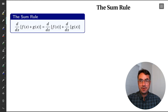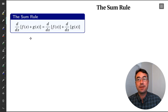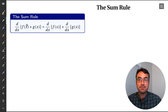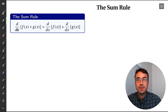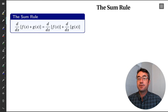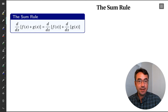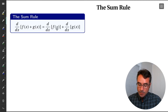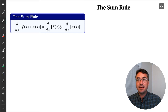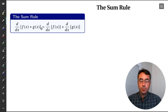We get another one of our derivative rules here, and this tells us what to do with the sum of two functions. We call it the sum rule. So if we have one function f of x plus another function g of x, how do we differentiate that sum? It turns out the derivative works really nicely with addition and subtraction. We focus on the first part, differentiate that, focus on the second part, differentiate that, and then just add the two results. This is our sum rule.